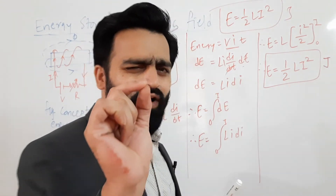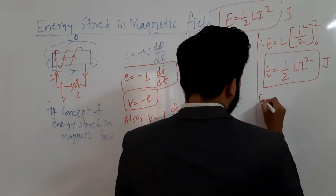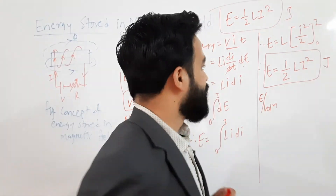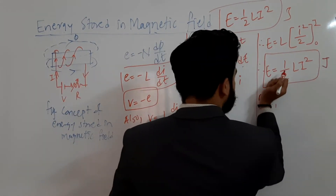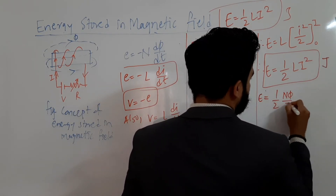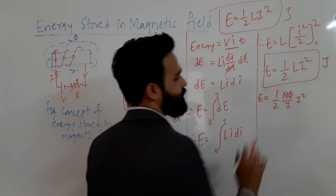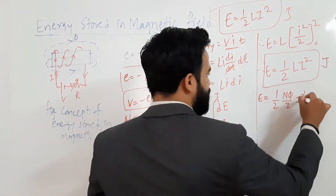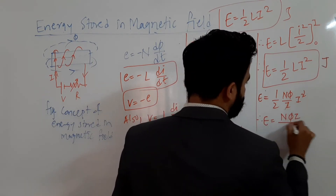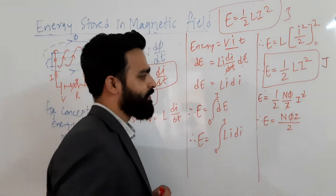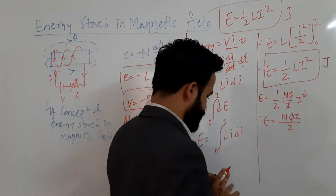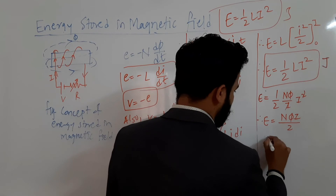Now let's derive the equation for energy stored per unit volume. Volume = area × length, in meter cubed. To obtain this, I rearrange the equation by writing L = NΦ/I. Substituting, the two I's cancel, and we get E = NΦ/2. Next, substituting Φ = B·A (since B = Φ/A implies Φ = B·A), we write NΦ as B·A.